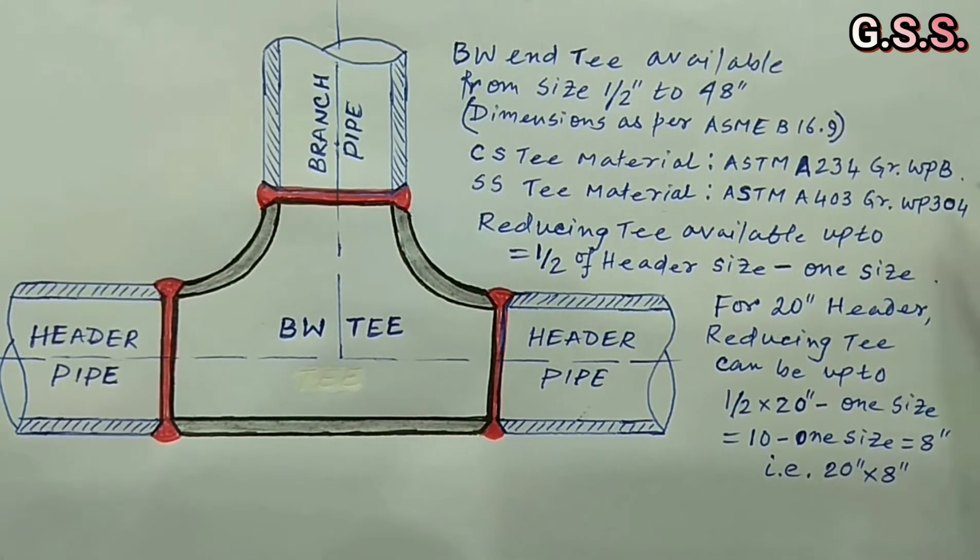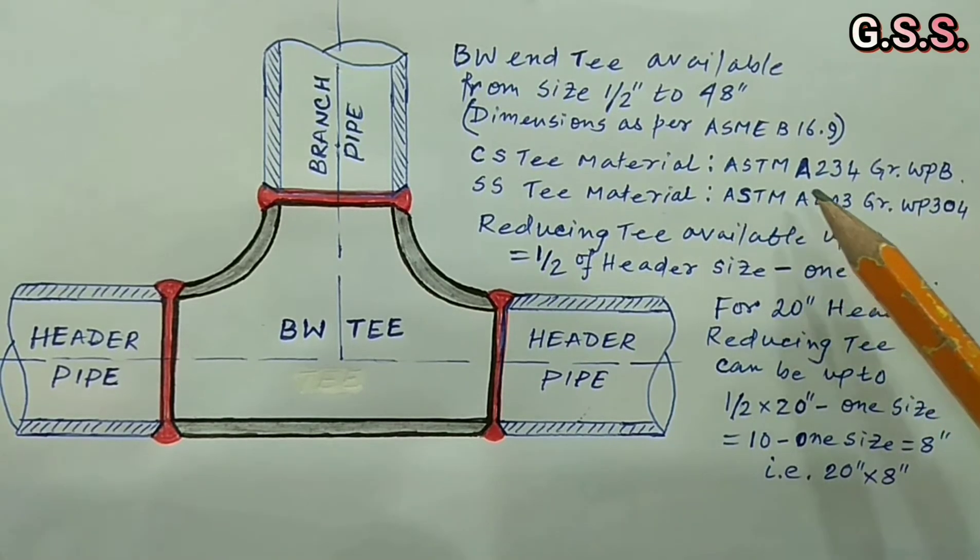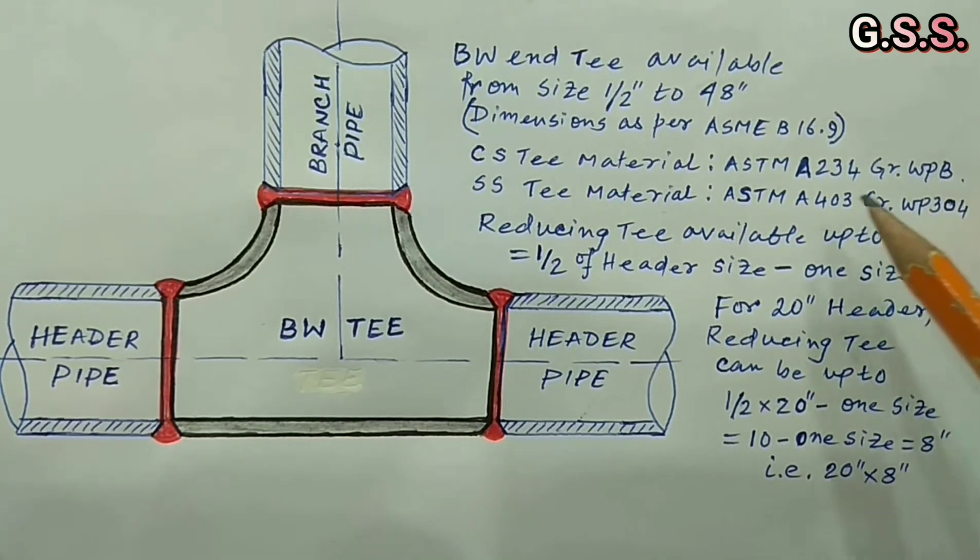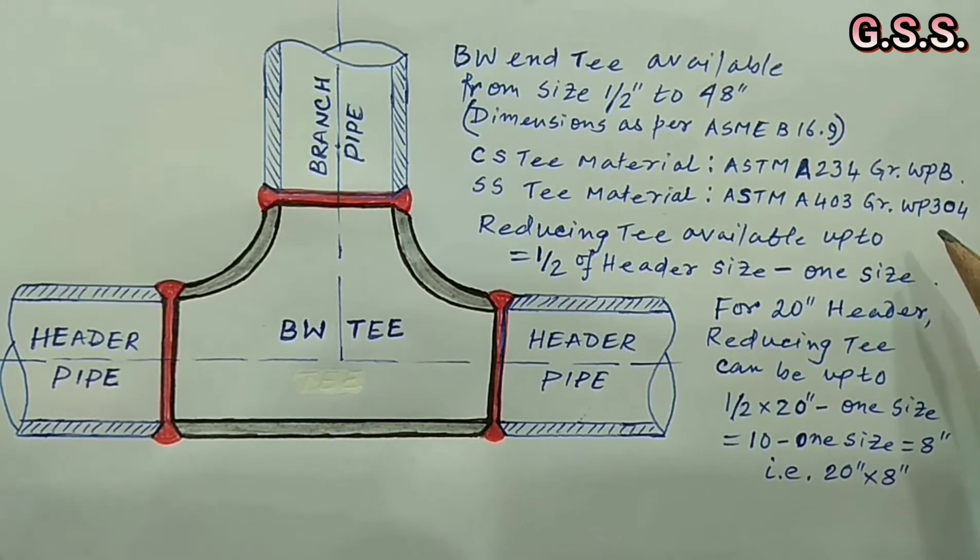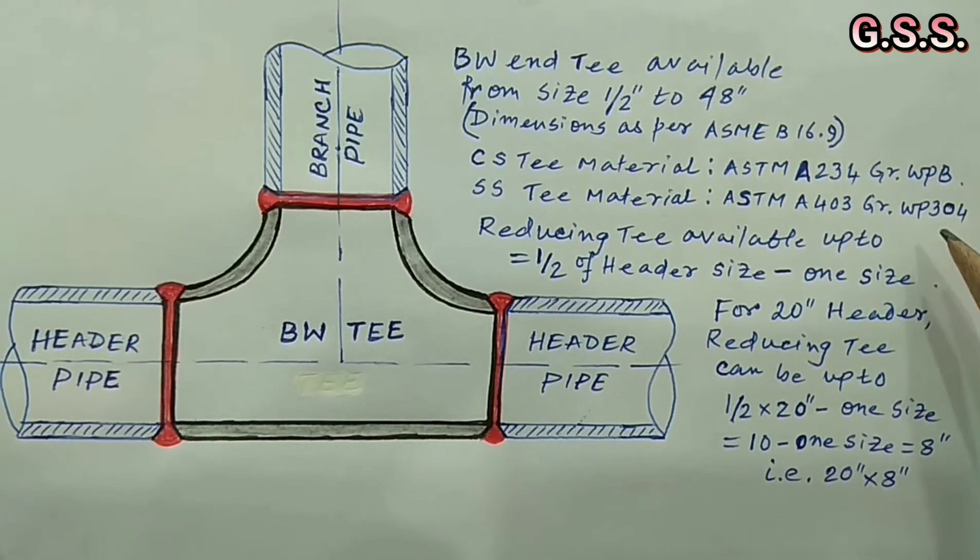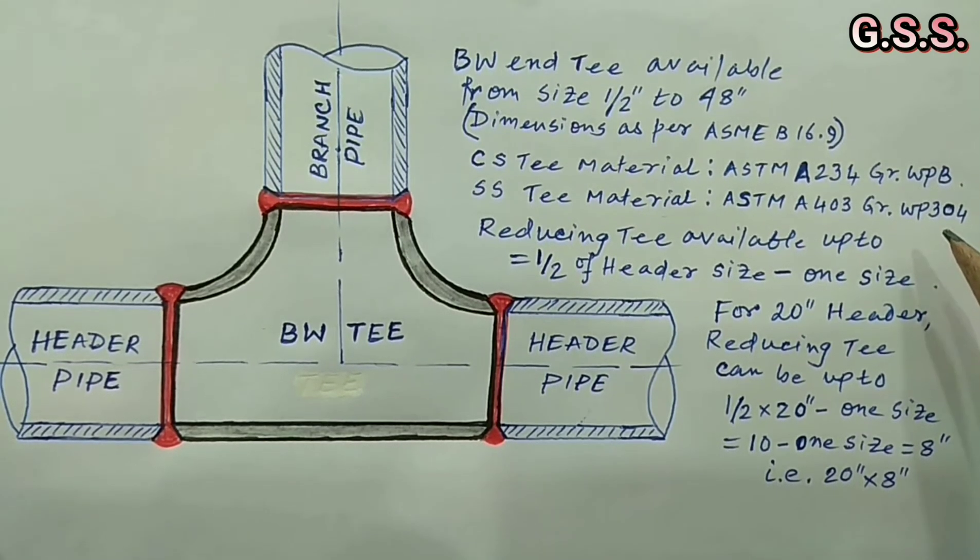Commonly used T material is as per ASTM A234 grade WPB for carbon steel T and ASTM A403 grade WP304 or WP304L or WP316 for stainless steel T.